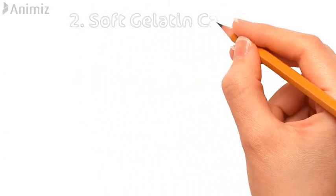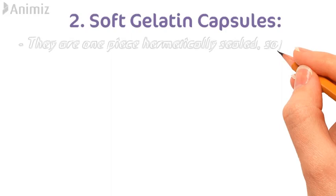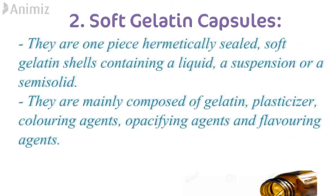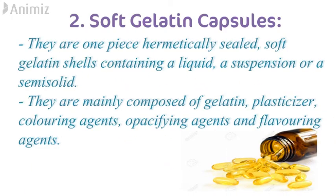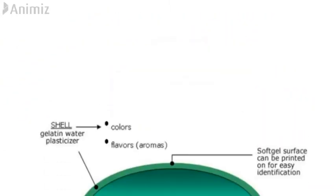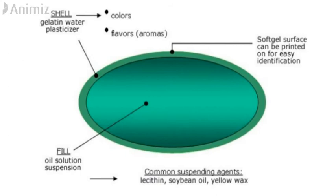Now let's see the second type of capsule, which is soft gelatin capsules. They are one-piece hermetically sealed soft gelatin shells containing a liquid, suspension or a semi-solid. They are mainly composed of gelatin, plasticizer, a colouring agent, an opacifying agent and a flavouring agent. The outer shell consists of gelatin, plasticizer, a colouring agent and a flavouring agent.